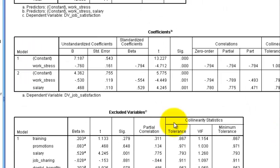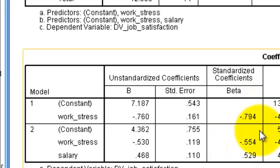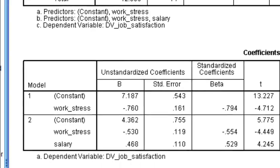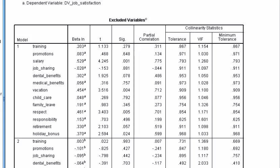Here's the coefficient box — we look at the beta weights. Work stress is negative 0.55, which is pretty big. When stress goes up, job satisfaction goes down, and vice versa. Salary has a big positive beta, so when salary goes up, job satisfaction goes up as well. We're going to skip over the parts and partials, and forget about the excluded variables box.